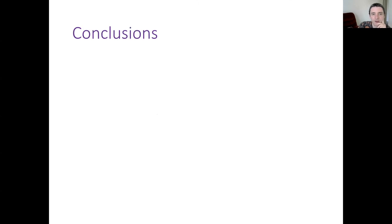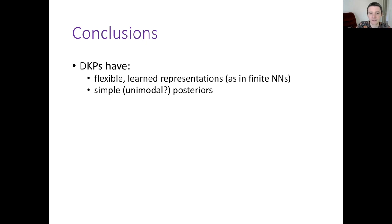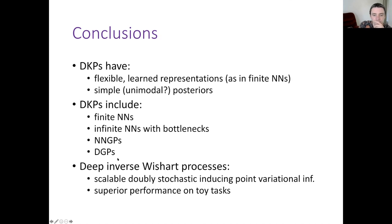In conclusion, deep kernel processes have flexible learned representations as in finite neural networks, but uncertainty estimation properties similar to Gaussian processes, and hopefully simple and potentially unimodal posteriors that are easy to approximate. They include many models we care about: finite neural networks, infinite neural networks with bottlenecks, NNGPs, and deep Gaussian processes. The deep inverse Wishart process provides a scalable doubly stochastic inducing point variational inference scheme with superior performance on these tasks. A big current challenge is scaling these up to convolutional networks.